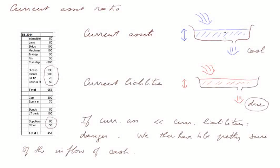Whereas if we have a stock like that buffer, there is less risk. So if the current assets are much less than the current liabilities, there is a danger. We then have to be pretty sure of the inflows of cash in order to face this payment. Whereas when we have a buffer, a buffer stock, there is less risk.